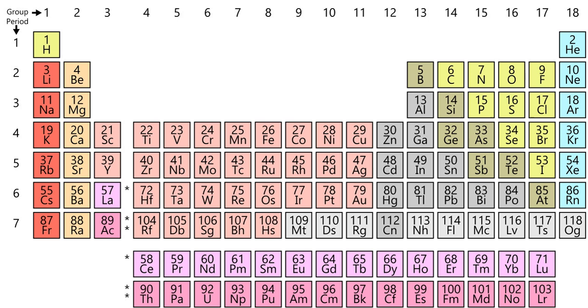All of the elements have some isotopes that are radioactive, although not all of these radioisotopes occur naturally. The radioisotopes typically decay into other elements upon radiating an alpha or beta particle. If an element has isotopes that are not radioactive, these are termed stable isotopes. All of the known stable isotopes occur naturally. The many radioisotopes that are not found in nature have been characterized after being artificially made.